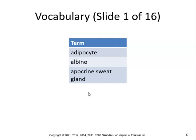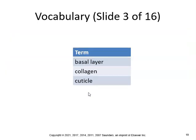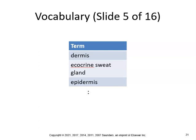An adipocyte is a fat cell. An albino is a person deficient in pigment. An apocrine sweat gland is one of the large dermal exocrine glands located in the axilla and genital areas. The basal layer is the deepest region of the epidermis and gives rise to all epidermal layer cells. Collagen is a structural protein found in the skin and connective tissue — collagen peptide supplements are available if you want to keep your hair, skin, and nails healthy. A cuticle is the band of epidermis at the base and sides of the nail plate. The dermis is the middle layer — remember, that's where your tattoos are. The eccrine sweat gland is the most numerous sweat-producing exocrine gland in the skin.